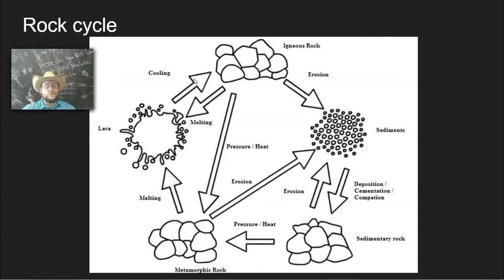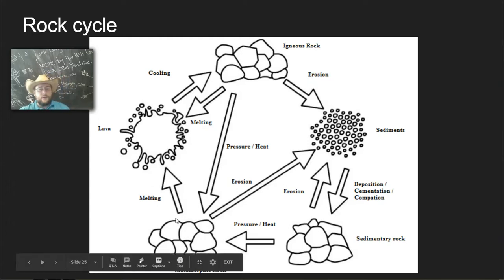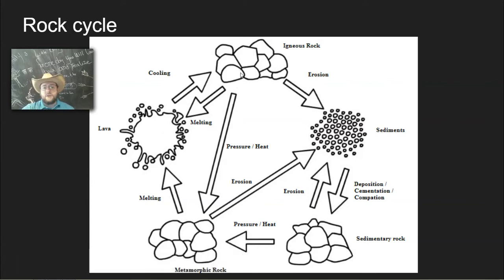So when lava cools, you get igneous rock. When igneous rock melts, you get lava again. When metamorphic rock melts, you get lava. And if you have igneous rock that undergoes pressure or heating due to things like uplift, subsidence, plate tectonics, volcanic action, that's going to cause it to become metamorphic rock. Same with sedimentary rock.